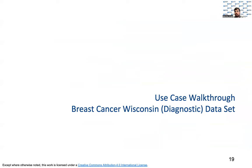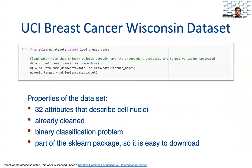So let's walk through a case study where we can actually use the tools we discussed before. For this case study, we will be working on the UCI Breast Cancer Wisconsin dataset. The dataset consists of 32 numerical attributes that describe cell nuclei pulled from breast tissue. It presents a clear binary classification problem of predicting whether the mass is benign or malignant. Since the data is part of the sklearn package, it is easy to download and use without the need of any external files.